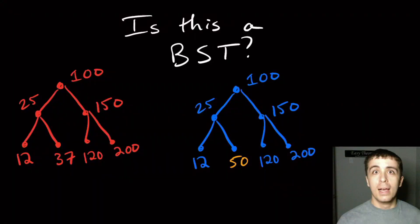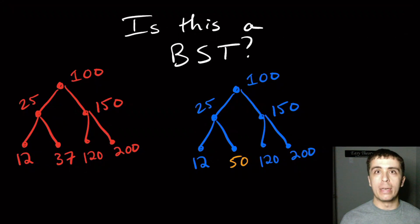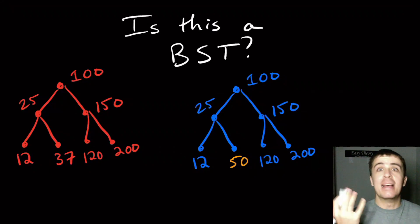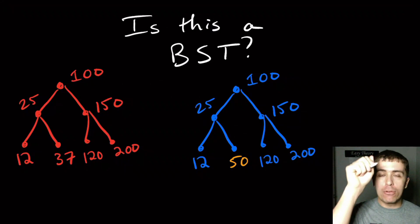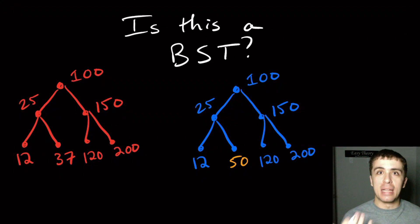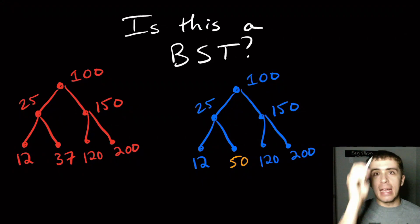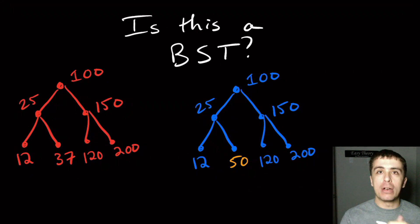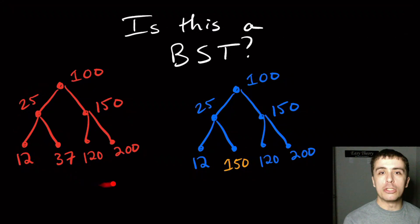Hi, I want to talk about a coding interview question called 'Is this a binary search tree?' Remember, a binary search tree is a binary tree which is a search tree, meaning that for every node, everything to the left of it is less than or equal to that node, and everything to the right is bigger than or equal to that node.